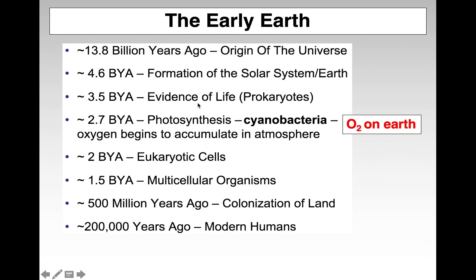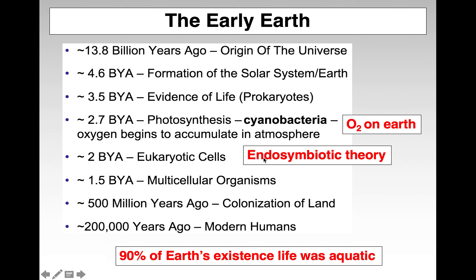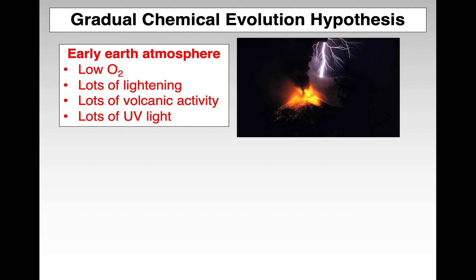Very early earth was about 3.5 billion years ago. Then cyanobacteria came along, which provided oxygen for the earth. At some point, we have eukaryotic cells coming about through the endosymbiont theory, and then multicellular organisms, colonization of land, and eventually humans. And 90% of the earth's existence was completely aquatic in terms of life.